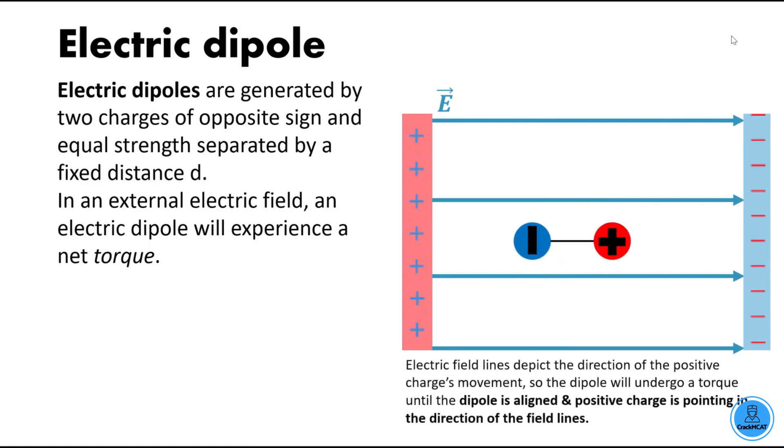What I mean by this is that field lines show you how the positive charge would move. So the dipole will point in the direction of the field lines, with the positive end of the dipole pointing in that direction.